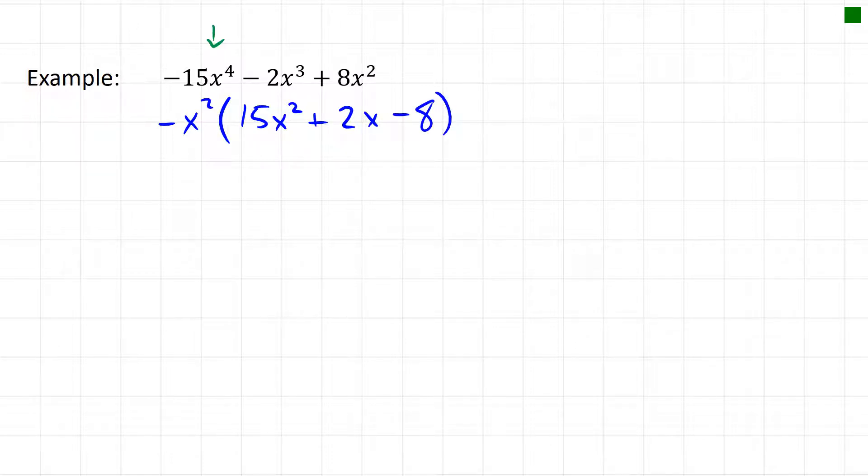And now this looks like a nice messy trinomial that we can do. 15 times negative 8 is going to be something large. In my calculator I find that it's negative 120. And now we'll search for factors of negative 120 that might get us to add to 2, and I'm going to try 12 and 10. I think this has a lot of potential to work, and if I do positive 12 and negative 10, I'd get the combo I need. We still have this common factor out front. That's 15x² plus 12x minus 10x minus 8.